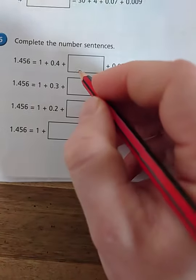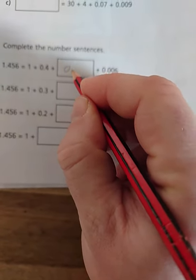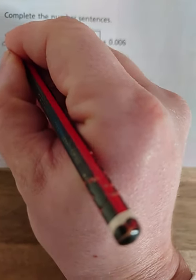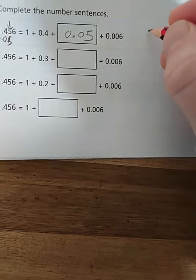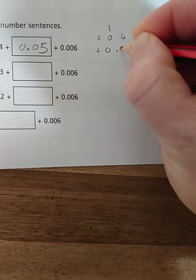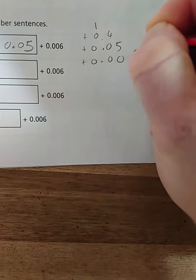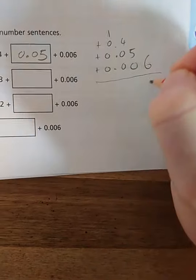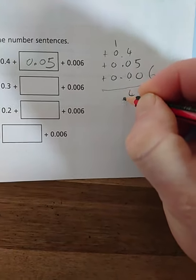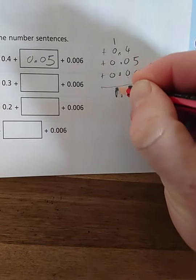And the same for this one. This one is 1 plus 4 plus 0.05. That's what that one's worth. Plus 0.06. If you added all those together, 1 plus 0.4 plus 0.05 plus 0.006, you'd have 6. 5 plus 0 is 5. 4 plus 0 plus 0 is 4. 1 plus 0 plus 0 plus 0 is 1. Make sure my decimals are lined up. And I have the same number.